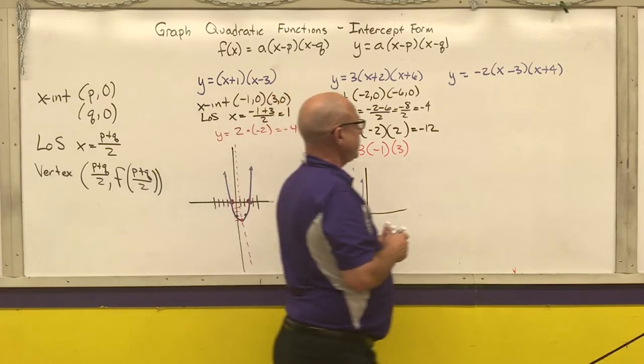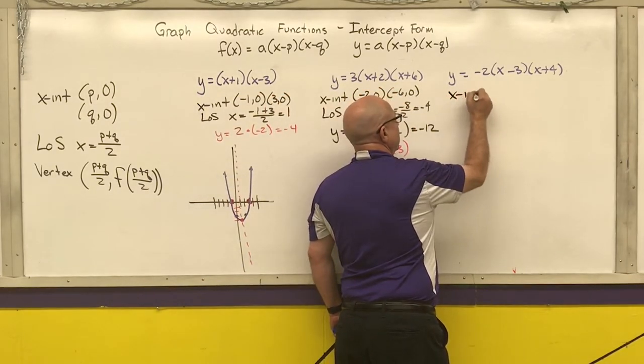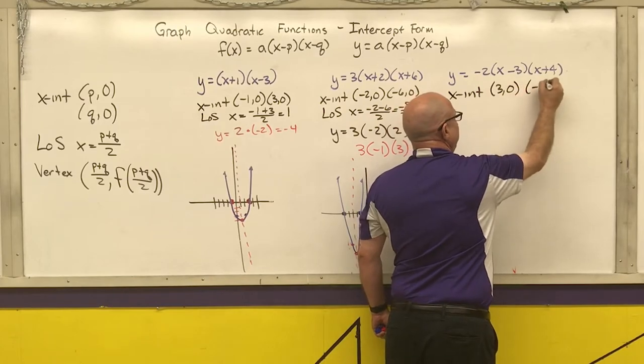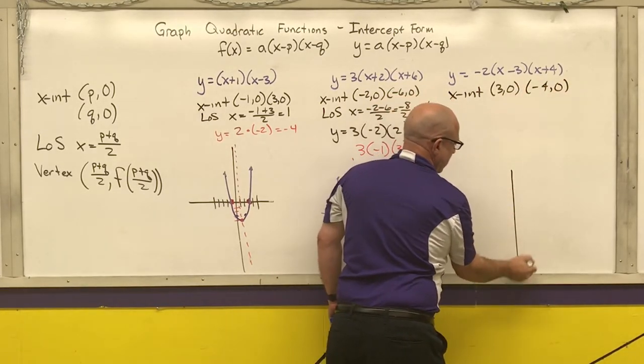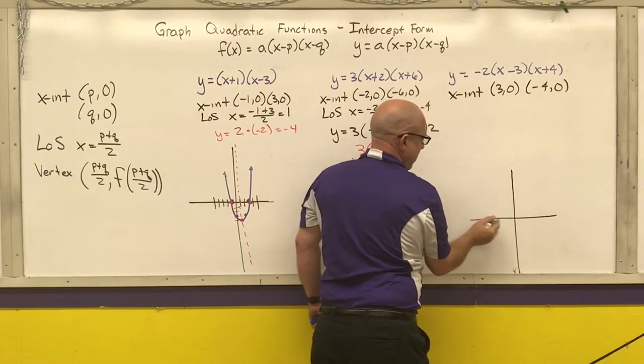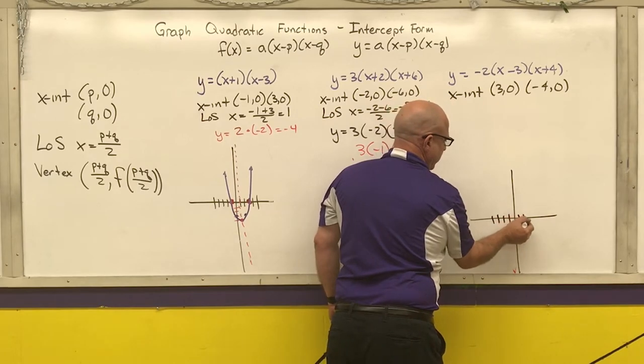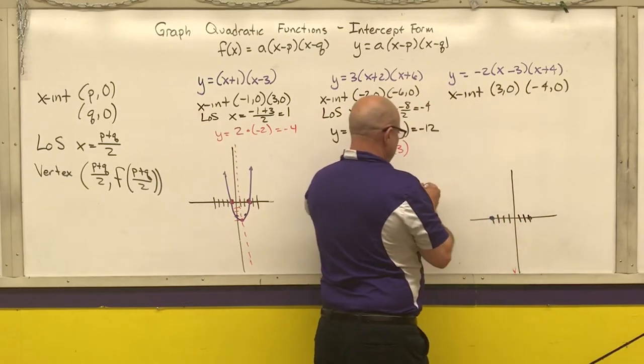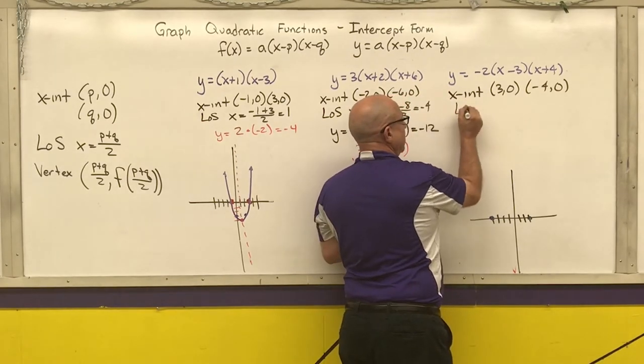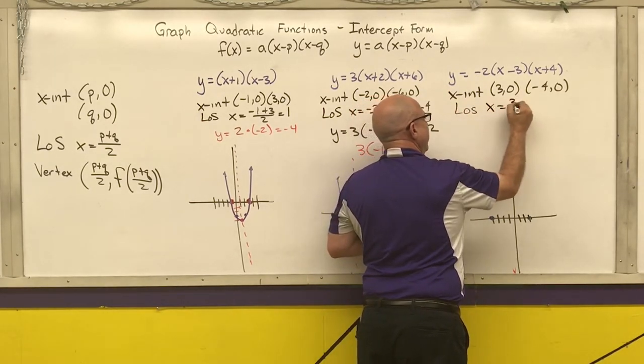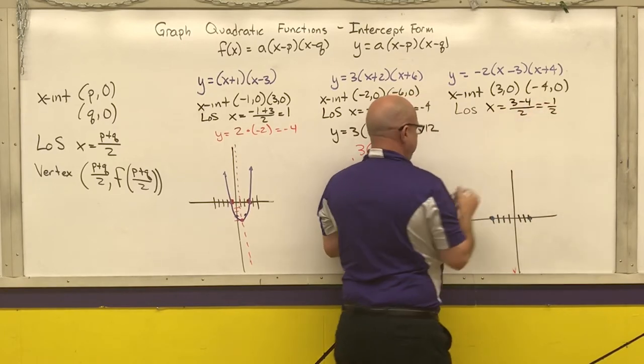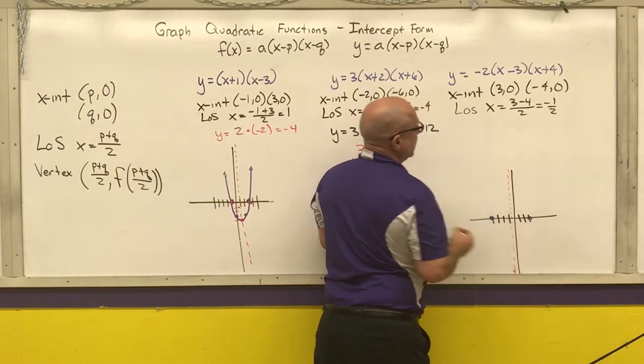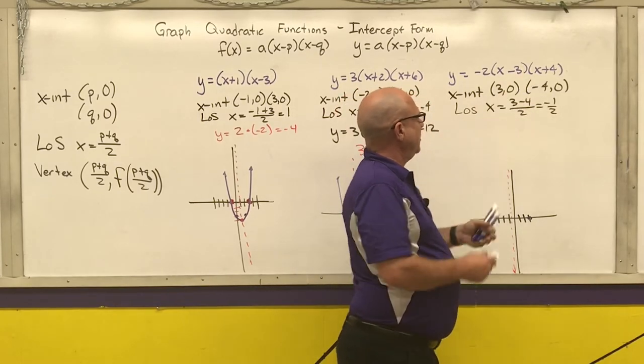Last example. Our x-intercepts are at the opposite of that number. So 3 comma 0. The opposite of that number, negative 4 comma 0. My line of symmetry is halfway in between those two numbers. 3 minus 4 over 2 is negative 1 half. So draw your line of symmetry. Put the x-coordinate for your line of symmetry into your original equation.